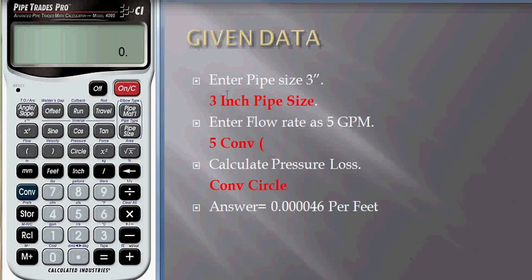First enter pipe size as 3 inches. Press 3, press inch, and press pipe size so that the calculator will store pipe size as 3 inches.